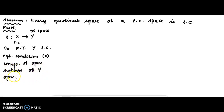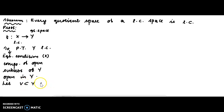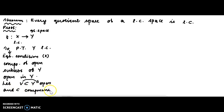With respect to Y: let V be an open subset of Y, and let C be a component of V. We select V open in Y and consider C, a component of V, or equivalently a component of open subsets of the space which is to be locally connected.